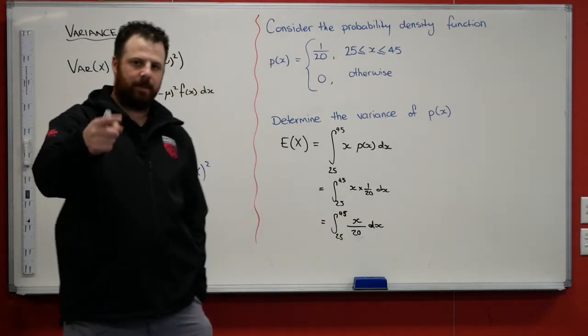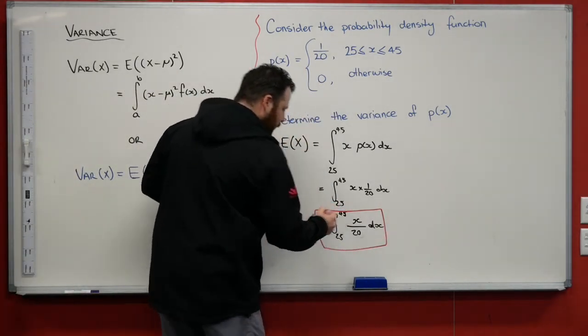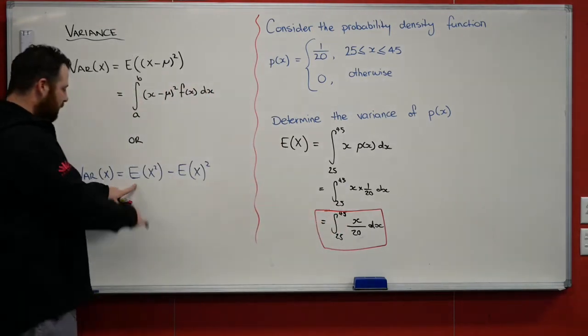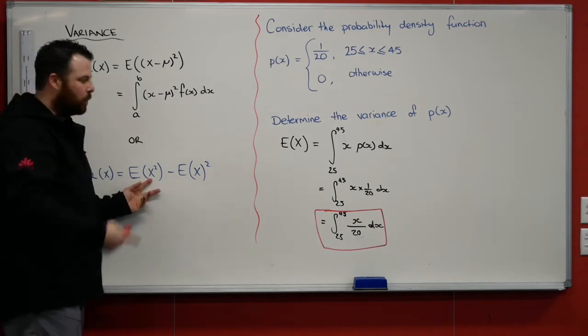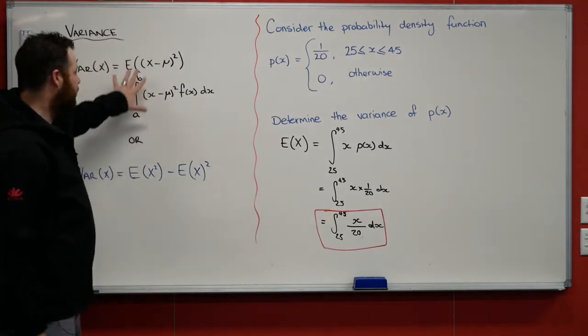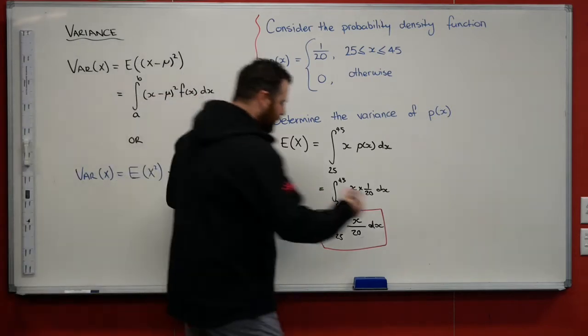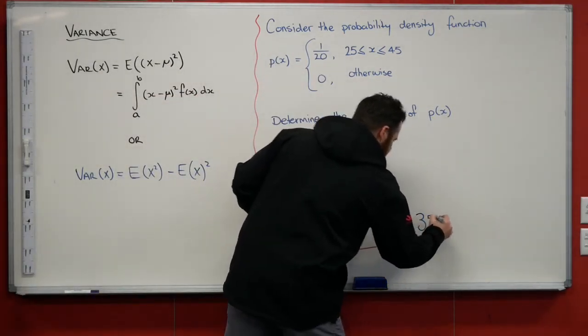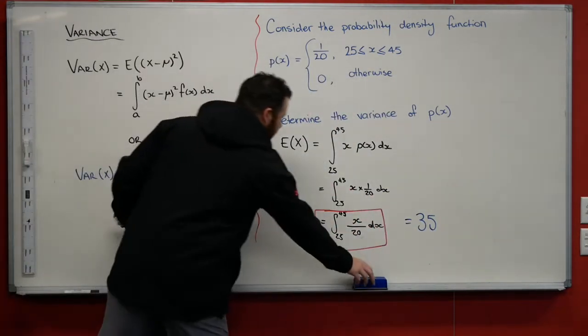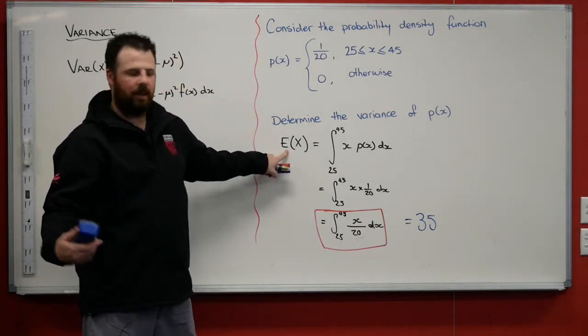When we evaluate this integral here, that gives us our expected value. What we're going to want to do, though, is remember this step, because it's at this step, when we come over here for our variance, that we're going to put x squared into here and evaluate that part again, instead of having to deal with all of this. Just for fun, that is going to equal 35 when you evaluate that integration. So we haven't determined the variance yet. All we've done is we've found the expected value.